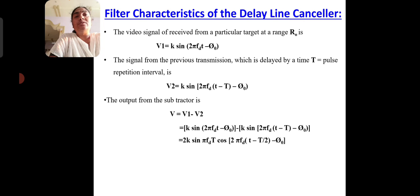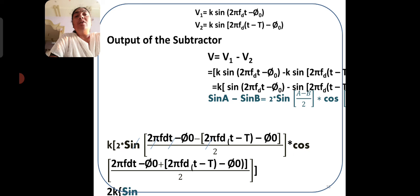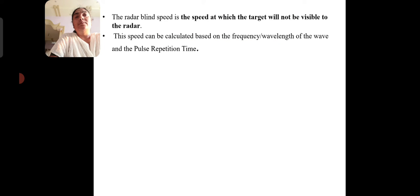The subtractor computes V = V1 − V2. The frequency response of the single delay line canceller is H(f) = 2 sin(π·f_D / T_P). The radar blind speed is the speed at which the target is not visible to the radar.